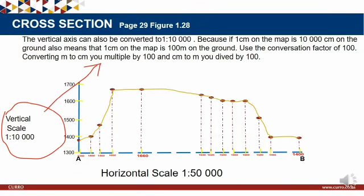To convert meters to centimeters, I multiply by 100. When moving from centimeters to meters, I divide by 100. Conversion factors work like that — when moving to higher units like centimeters to meters, you divide. When moving to lower units like meters to centimeters, you multiply by that factor, in this case 100.